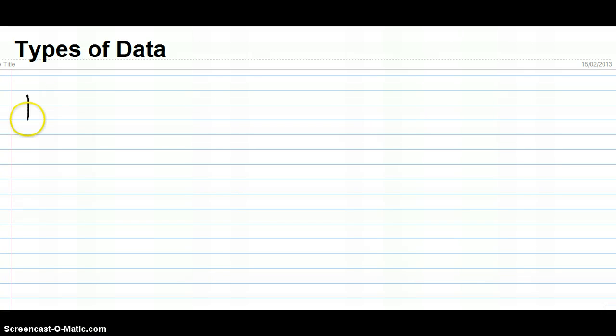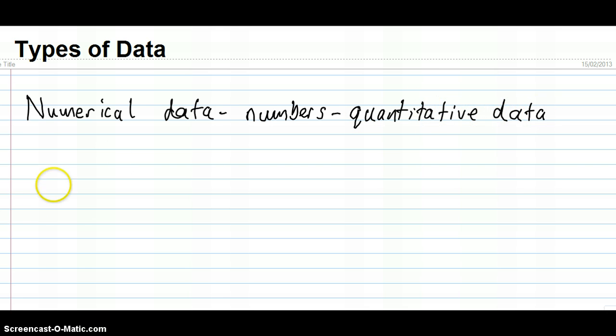Okay, today we're going to be looking at different types of data. The two main categories of data are numerical data, which has to do with numbers. It can also be called quantitative data - quantities of things, numbers of things. So, numerical data to do with numbers, quantitative.